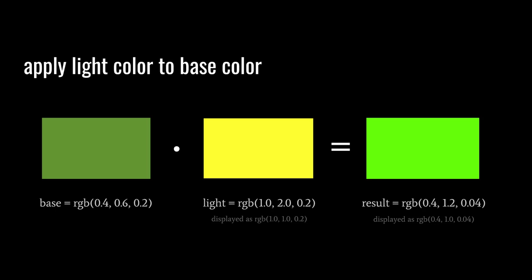For example, assuming a base green color of (0.4, 0.6, 0.2) struck by a light with R=1, G=2, B=0.2, the result is (0.4, 1.2, 0.04). RGB component values are capped at 1 for display, but lights can have components exceeding 1, representing an intense light that produces a result brighter than the base color. Here we're effectively doubling the green value of 0.6.